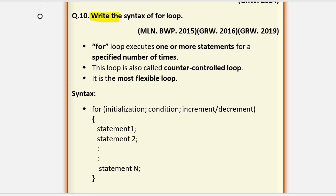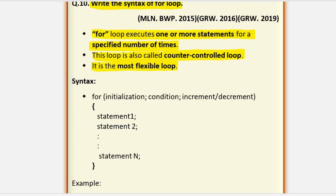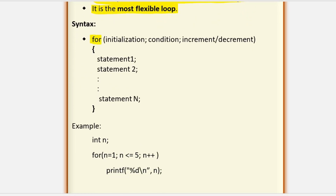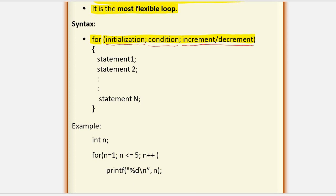Write the syntax of for loop. For loop executes one or more statements for a specified number of times. Before execution, we already know how many times the for loop will execute. This loop is also called a counter-controlled loop and it is the most flexible loop. The keyword 'for' comes first, and in parentheses there are 3 sections: number 1 is initialization (the counter variable is initialized), then the condition is tested, and in the third section increment or decrement is specified.